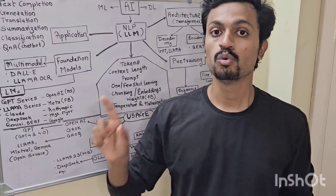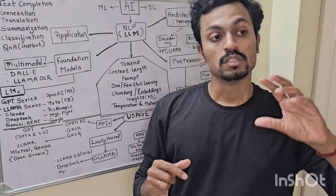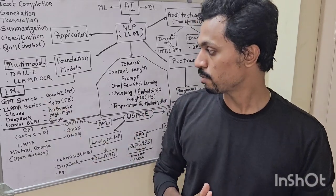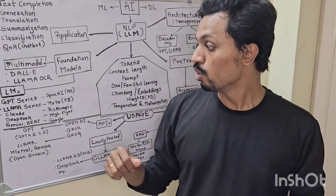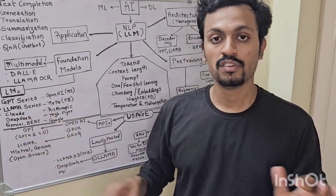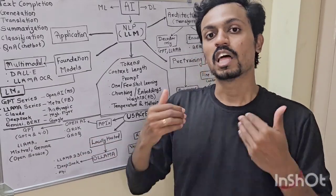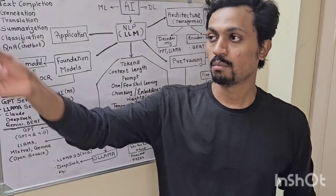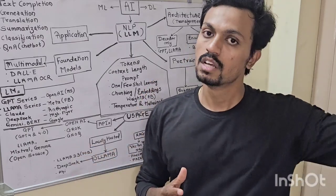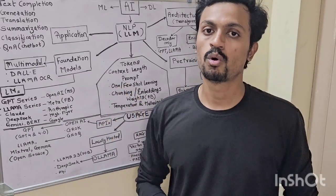We will talk about GROQ. GROQ is a company that has a new server and hosts all open source models. Open source models like Gemini are free. GROQ is a freely hosted service for LLMs. There is also a limited usage, but for learning purposes it has more than enough bandwidth.